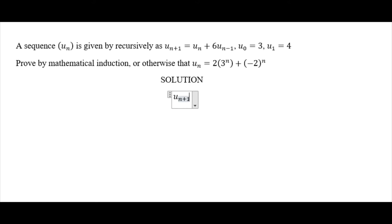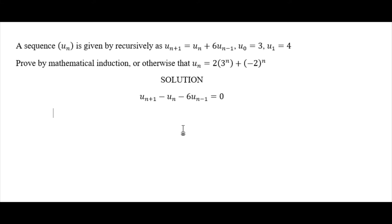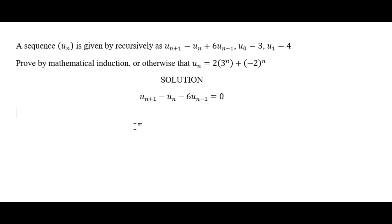We rewrite it in the form: u(n+1) minus u(n) minus 6·u(n-1) = 0. I am identifying this as a second-order difference equation because the difference between the indices n+1 and n-1 is 2, making it second order. Since it's a second-order difference equation, we begin with the homogeneous equation.